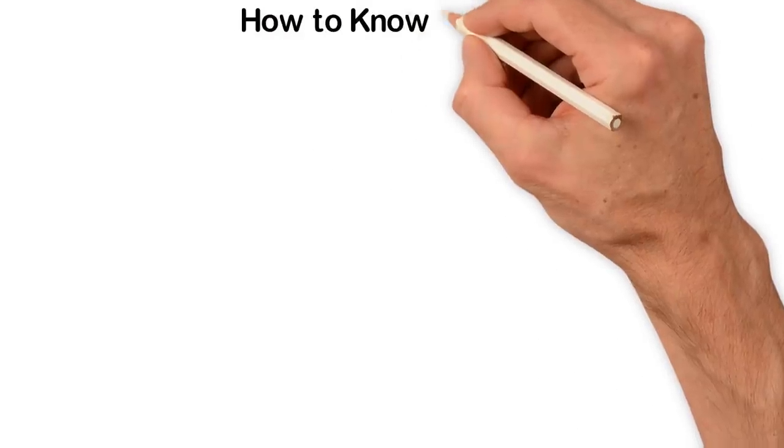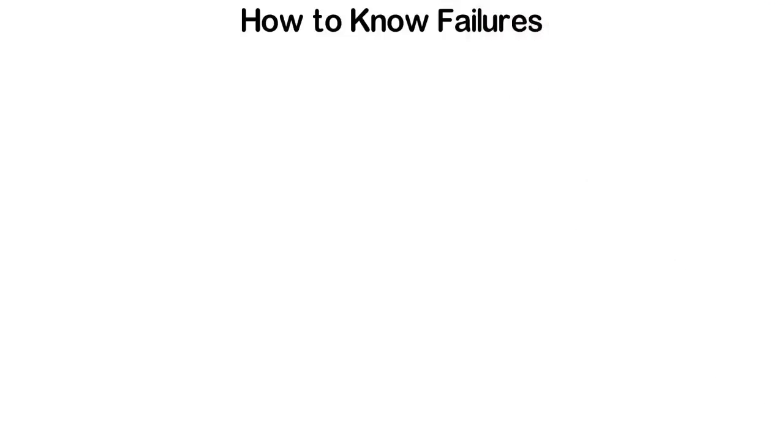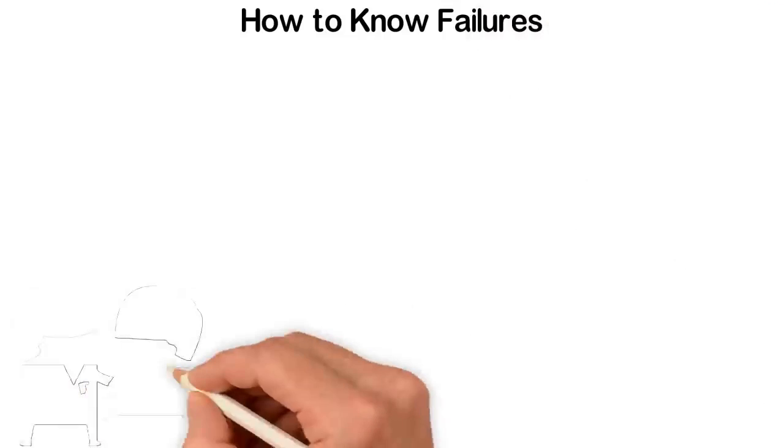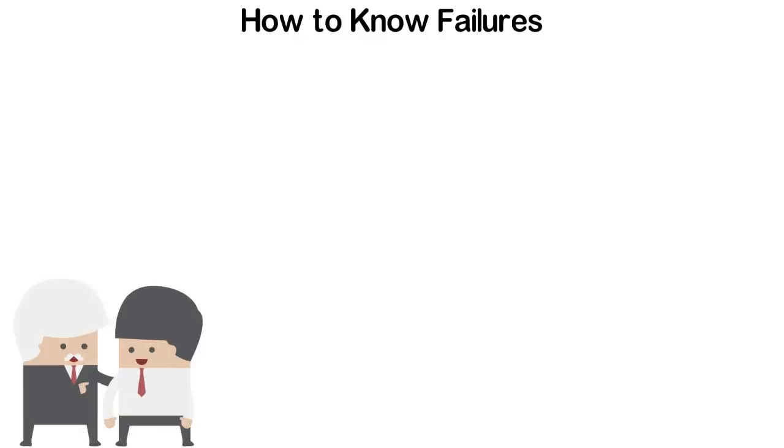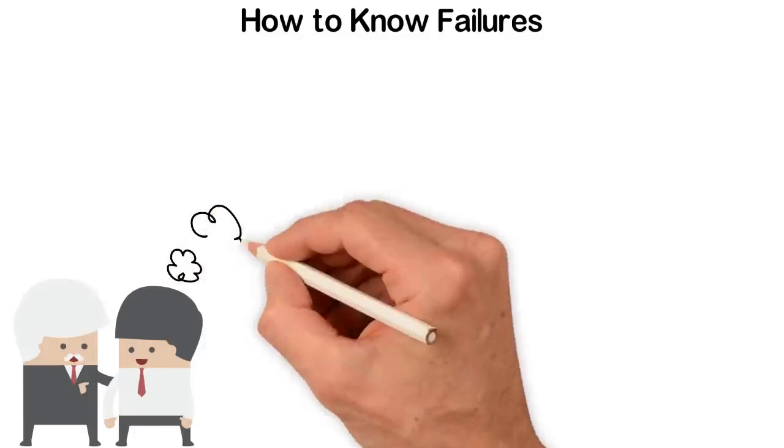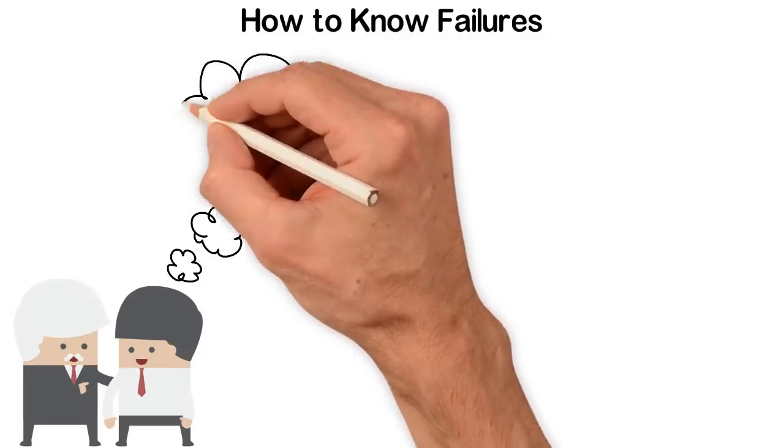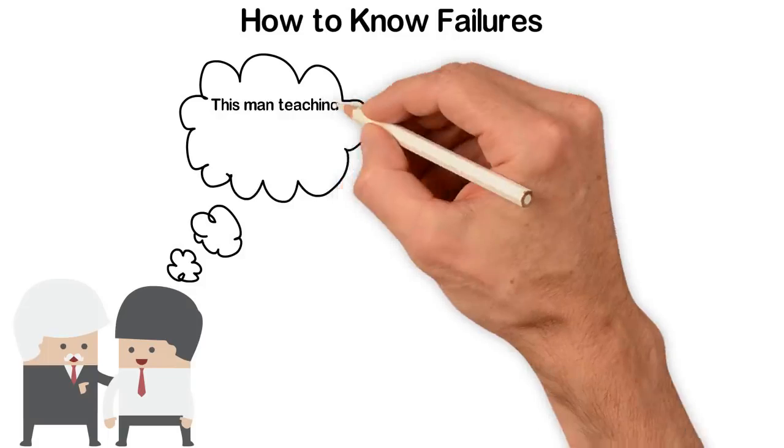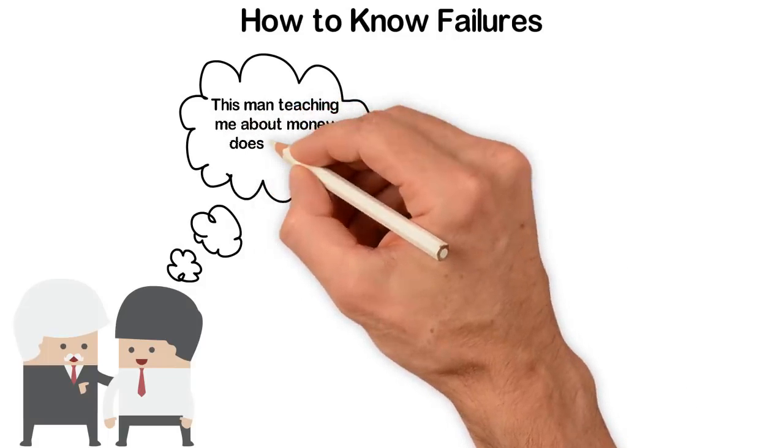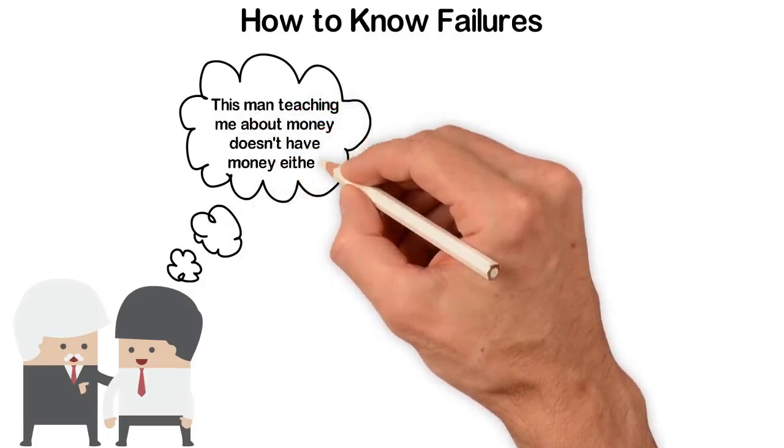How to know failures. So, how can you know failure? Sometimes it's very obvious, usually for those guys who are already old. If, for example, a 65-year-old poor uncle is advising you about money, it's obvious that he's broke. And believe me, people who are broke at such age aren't qualified to teach anyone about money.